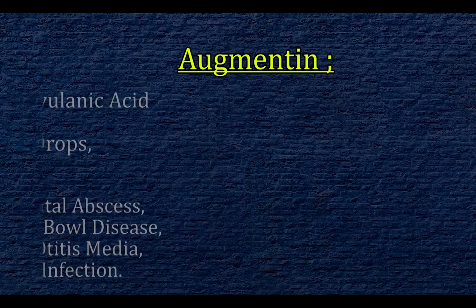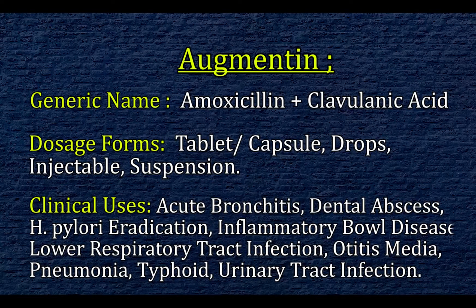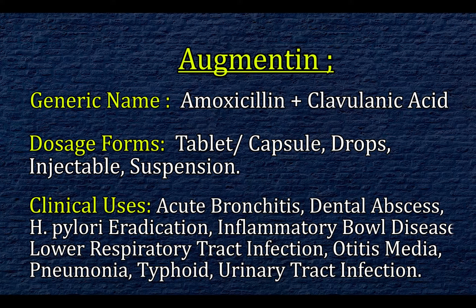Augmentin. Generic name: Amoxicillin and clavulanic acid. Dosage forms: tablet, capsule, drops, injectable, suspension. Clinical uses: acute bronchitis, H. pylori eradication, inflammatory bowel disease, lower respiratory tract infection.